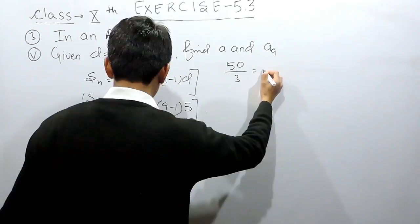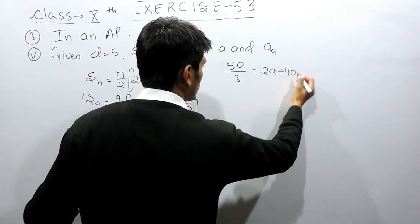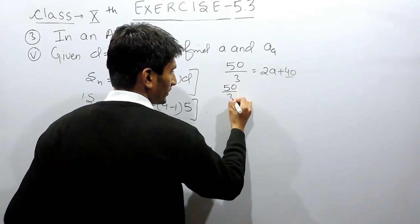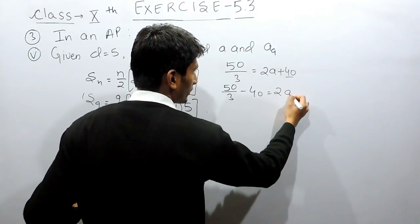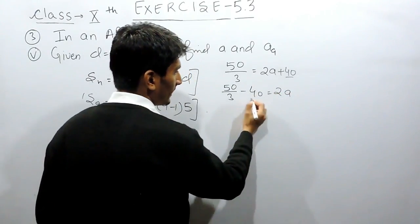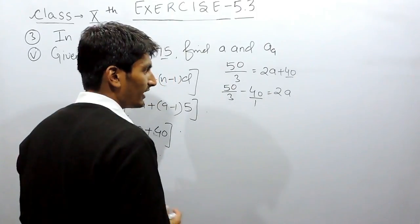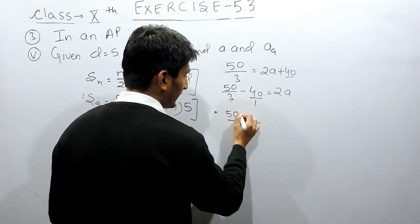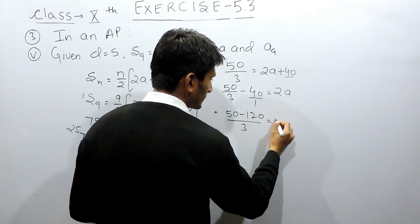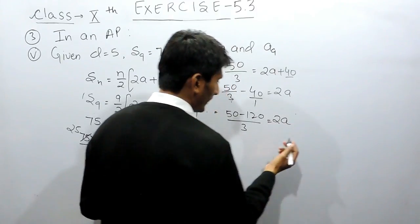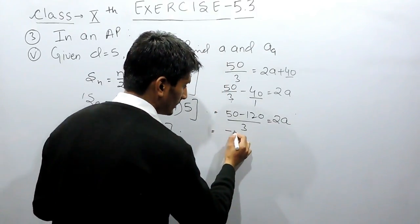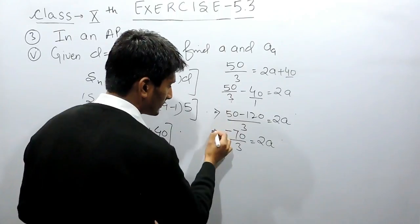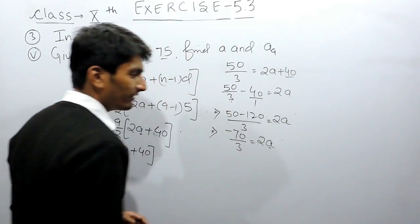So we have 50 upon 3 equals 2a plus 40. Shifting the constant to the other side, this becomes 50 upon 3 minus 40. Taking the LCM of 3 and 1, which is 3, we get (50 minus 120) upon 3 equals 2a, which simplifies to minus 70 upon 3 equals 2a.